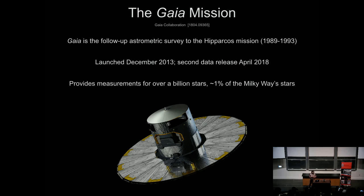Gaia had its second data release in April of this year. It's the follow-up astrometric survey to Hipparcos, which ran in the late 80s and early 90s. It's very revolutionary in the sense that it's going to be providing measurements for over a billion stars in the Milky Way — that's about one percent of all of the Milky Way's stars.